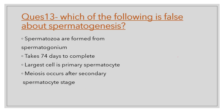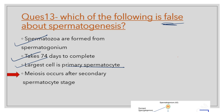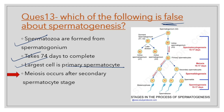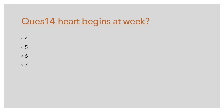Question number 13: Which of the following is false about spermatogenesis? Spermatozoa are formed from spermatogonia — correct. It takes 74 days to complete the cycle — correct. The largest cell is the primary spermatocyte — correct. But 'meiosis occurs after the secondary spermatocyte stage' is a wrong statement. As seen in the diagram, meiosis occurs after the primary spermatocyte stage, not after the secondary spermatocyte stage.